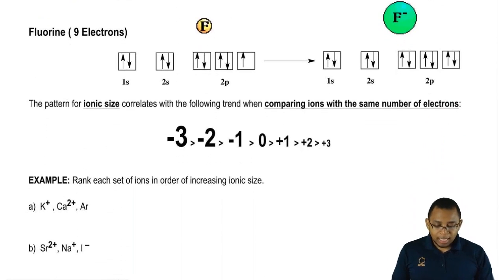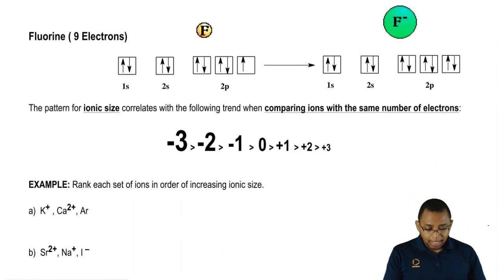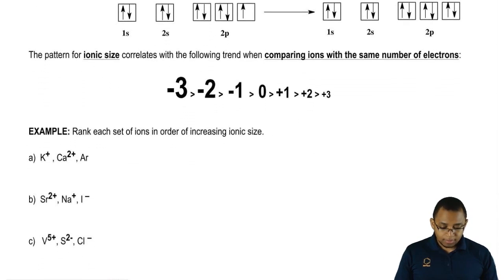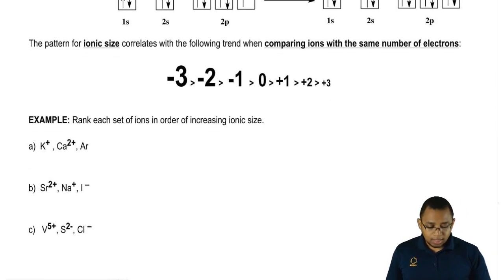Now, we're going to say that pattern for ionic size correlates with the following trend when comparing ions with the same number of electrons. What does that mean? Well, it means this. Let's say I was ranking different elements together.